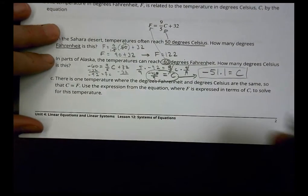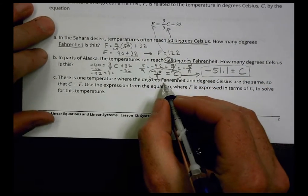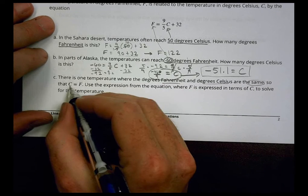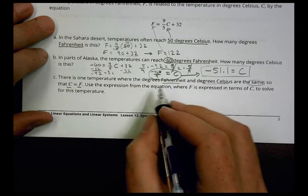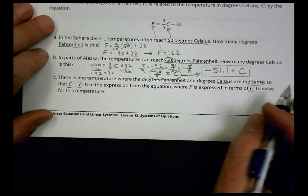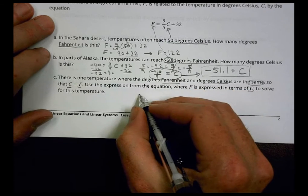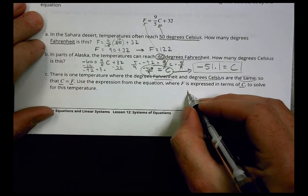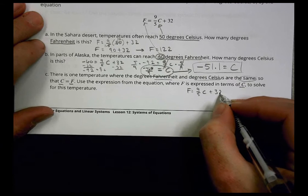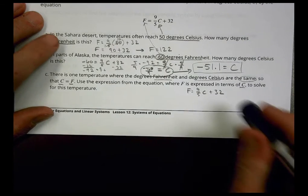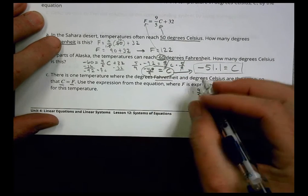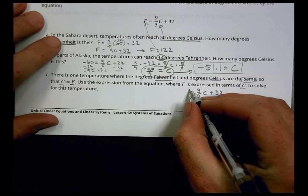And finally, our last one here. There is one temperature where the degrees Fahrenheit and degrees Celsius are the same, so that C equals F. Use the expression of the equation where F is expressed in terms of C to solve. It means you take your equation F equals 9/5 C plus 32, and we don't want to have two variables. We're going to have a C right here. We're going to set it equal to C.